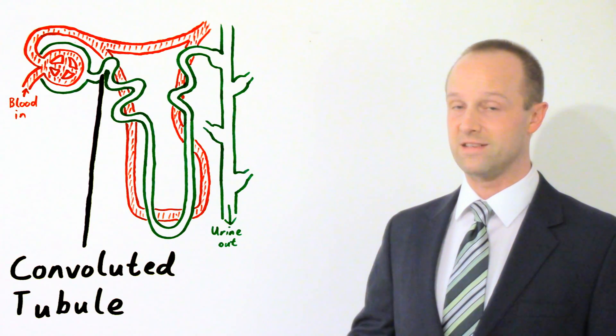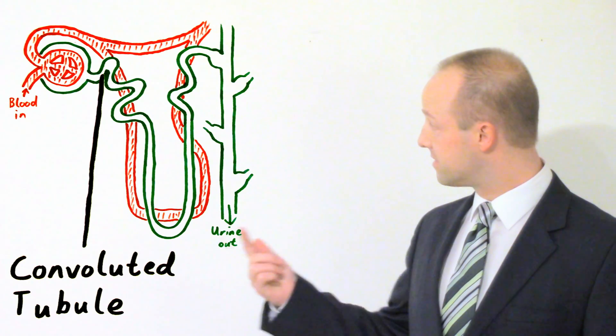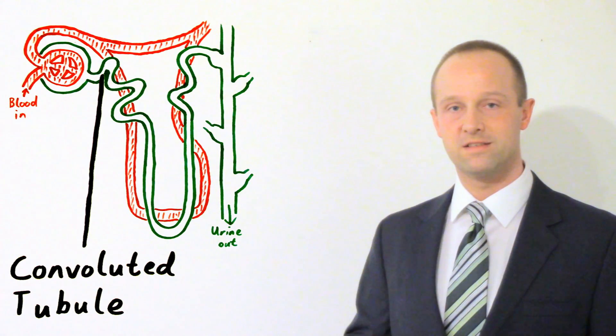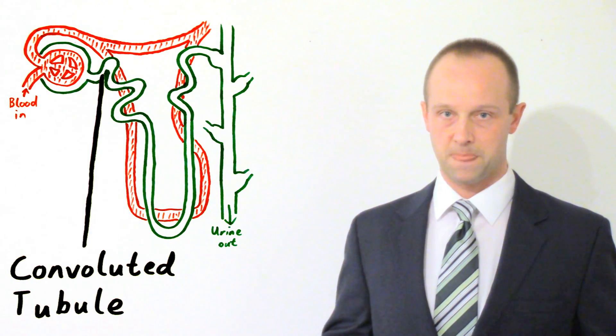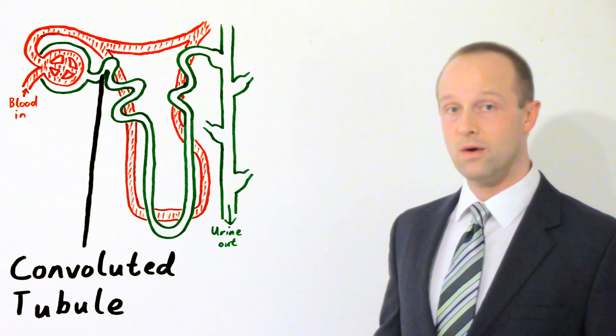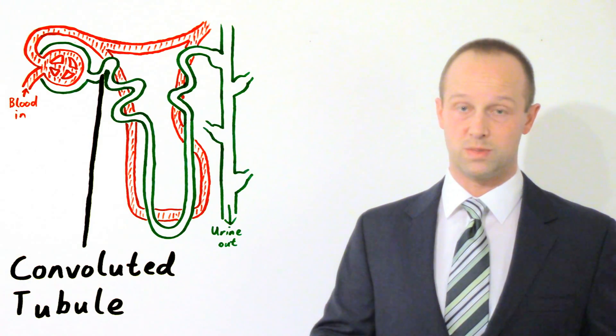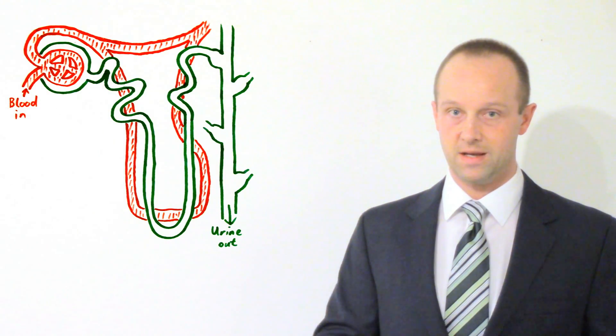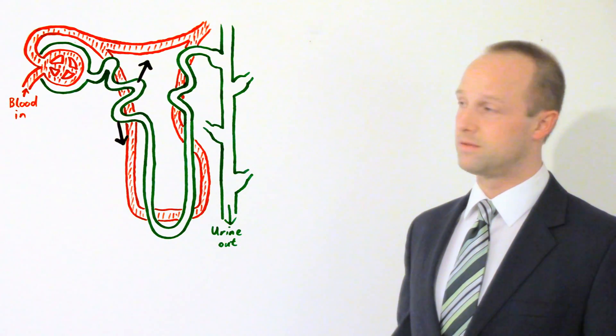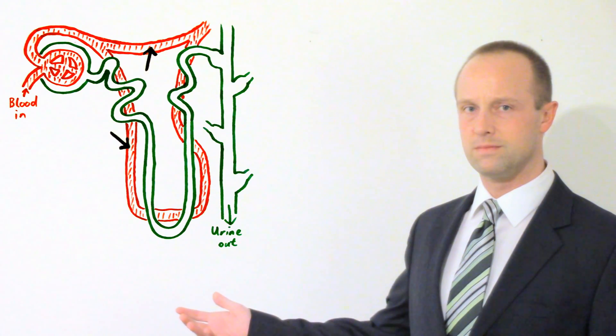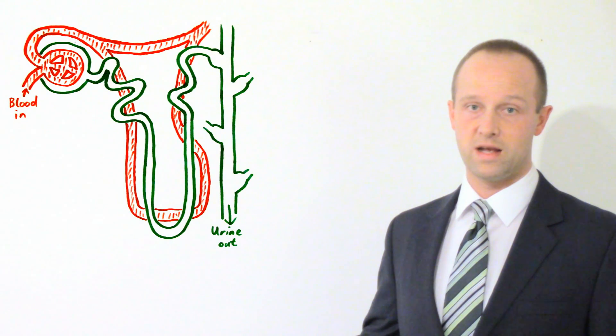And so that filtrate, that solution of sugar and ions and urea in water, passes along here. As it passes along here this is yet another leaky tube. Things are going to pass back out of it. And there are capillaries running alongside it which allow all the stuff which is passed back out of it to be reabsorbed into the bloodstream again. So the first thing which is reabsorbed pretty much immediately is the glucose. All of that passes more or less straight out. So you've then got a solution which contains those dissolved ions and the urea and water.